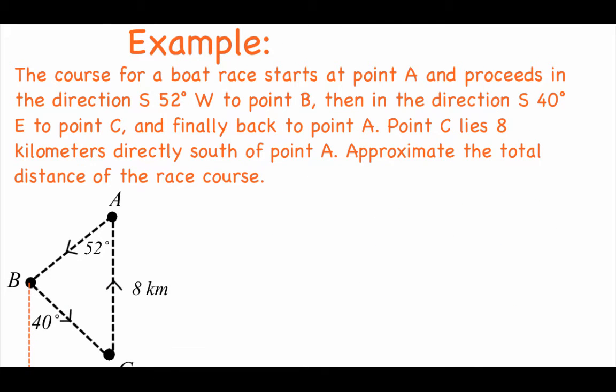Last example is not an area problem, but we're going back to some of our law of sines stuff that we talked about in part one of 6.1. So we've got a boat race taking place, and everybody is starting at point A. From point A, we head south 52 degrees west towards point B. Once we hit point B, we're going to turn and go south 40 degrees east towards point C. And then from point C, we're going to go due north directly back to point A. Now we're told that point C is exactly 8 kilometers south of point A, and we're going to have to use some law of sines stuff to help us find the other distances so that we can figure out the total distance of this race course.